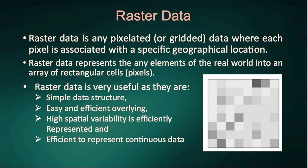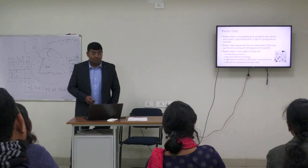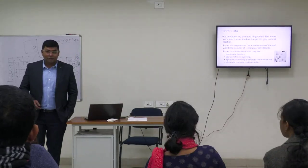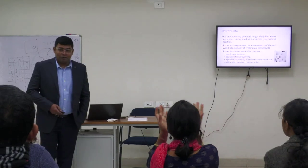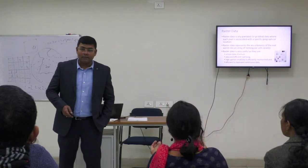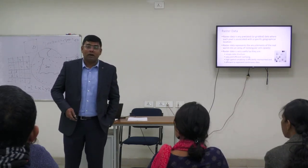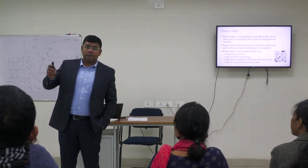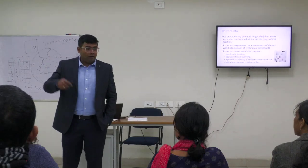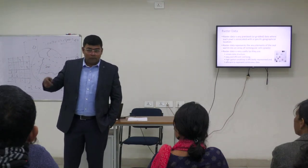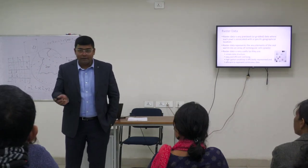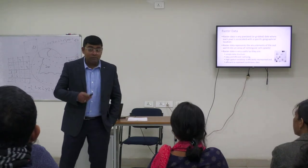Raster data allows easy and efficient overlaying — you can overlay different raster files one over another in a GIS environment. High spatial variability is also efficiently represented. For example, suppose you have a picture of Guwahati from 1901, or a picture of Guwahati on 15 August 1947, and one from today — you can compare the spatial variability and visually understand the difference and development that has occurred.